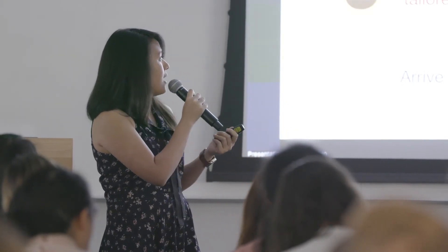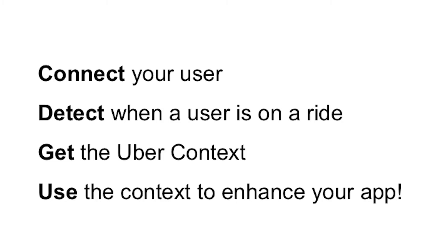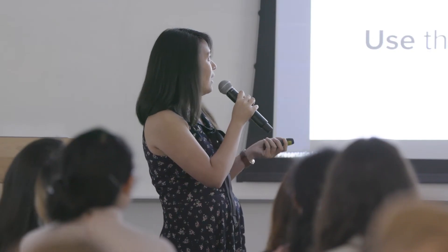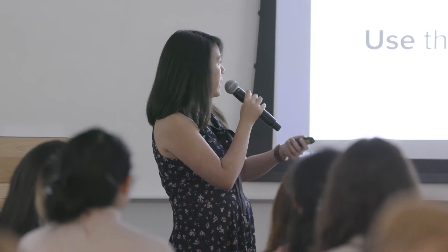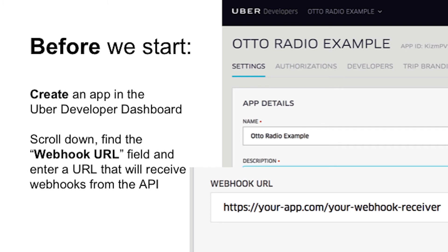Let's dig in a little bit. If you wanted to create something like this, there are four major steps: connect your user's Uber account to your app, detect when a rider is on a ride, get more information about their Uber context, and then use that context to enhance your app. The first three steps are all about using the Uber API, and the fourth step is where the magic happens. But before we dive in, you'll create an app in the Uber developer dashboard and enter a webhook URL receiver so that you can properly accept these notifications.